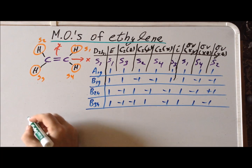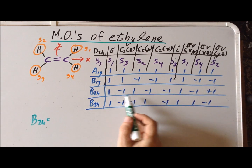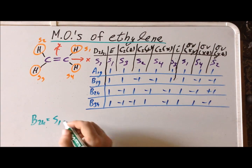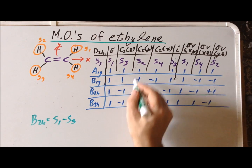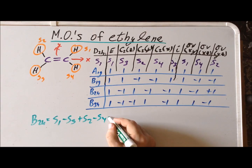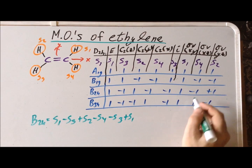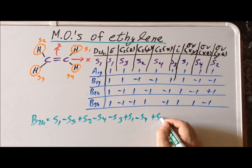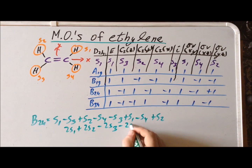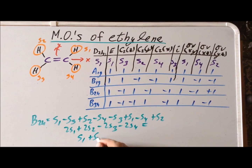Now for the B2u combination. Multiplying the characters: S1 − S3 + S2 − S4 − S3 + S1 − S4 + S2, giving 2S1 + 2S2 − 2S3 − 2S4. Reduced to lowest terms: S1 + S2 − S3 − S4. This is the B2u molecular orbital combination.